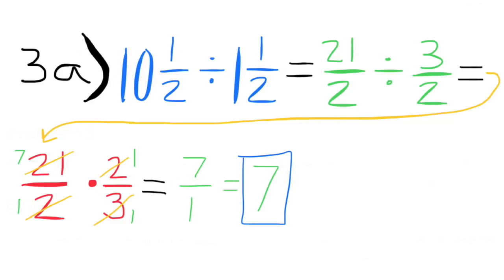That is twenty-one halves divided by three halves. The next step: multiply twenty-one halves times two-thirds, which simplifies to seven over one, which is seven. You would need seven tiles to tile the length of the bathroom floor.